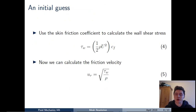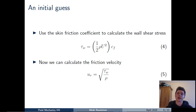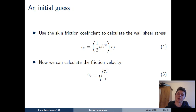Now that we have an estimate for the skin friction coefficient, we calculate the wall shear stress by multiplying by one-half rho U squared. Taking the square root of the wall shear stress divided by density gives the friction velocity U-tau, which was the missing quantity in our Y-plus formula.